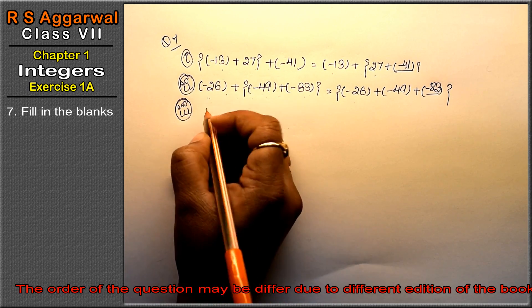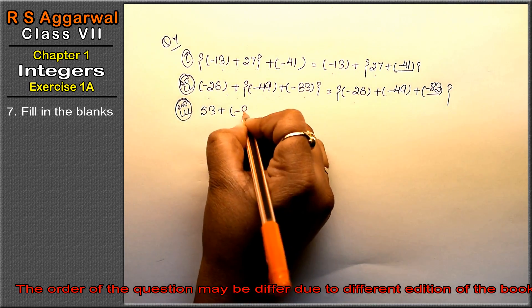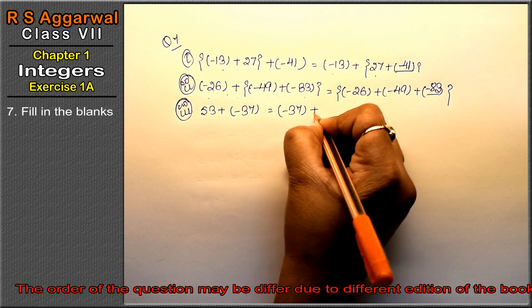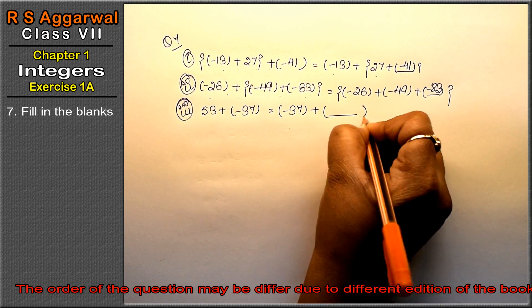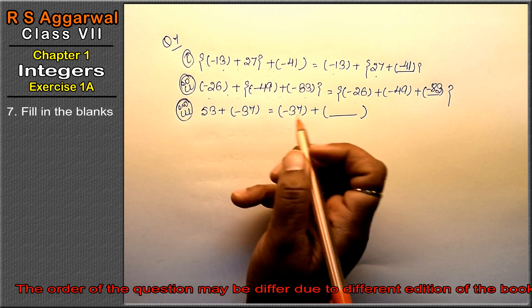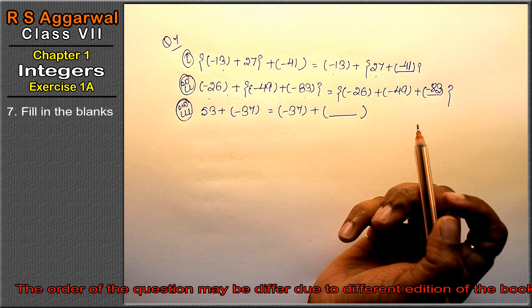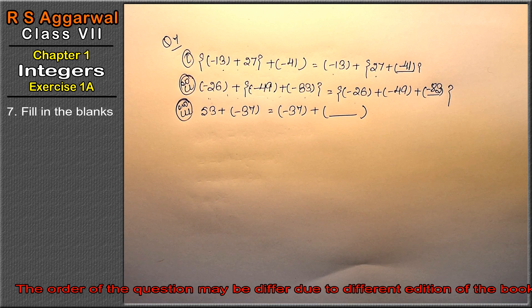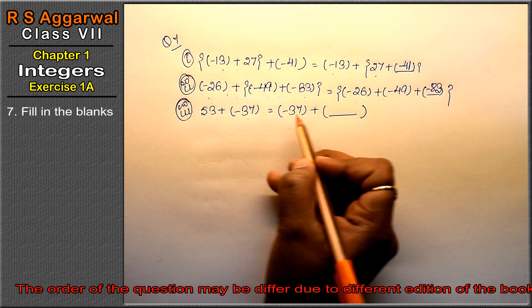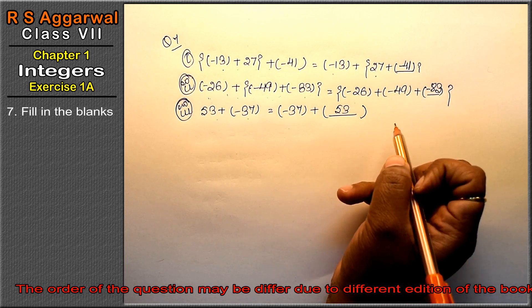Third part: 53 plus minus 37 equals minus 37 plus dash. Friends, this is the same property where we write A plus B or B plus A—it's one and the same thing. This is the commutative property: A plus B equals B plus A. So here will come 53.